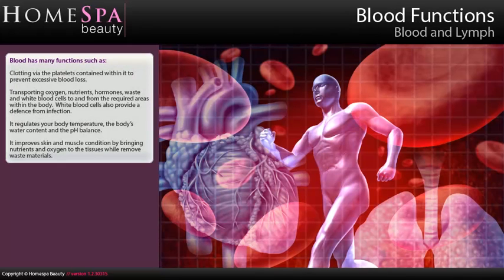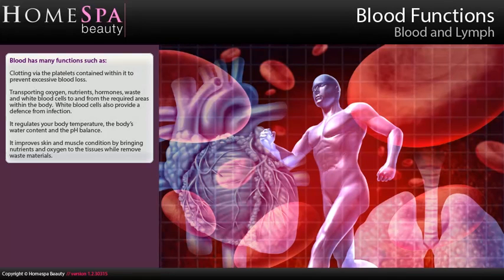Blood has many functions, such as clotting via the platelets contained within it to prevent excessive blood loss, transporting oxygen, nutrients, hormones, waste and white blood cells to and from the required areas within the body. White blood cells also provide a defence from infection. It regulates your body's temperature, water content and pH balance. It improves skin and muscle condition by bringing nutrients and oxygen to the tissues while removing waste materials.